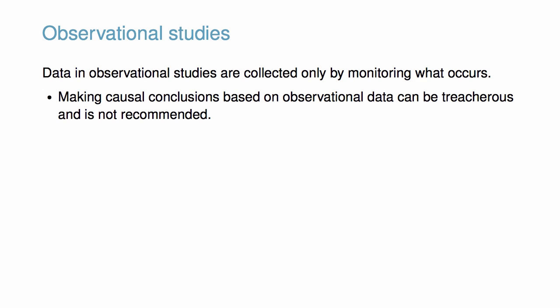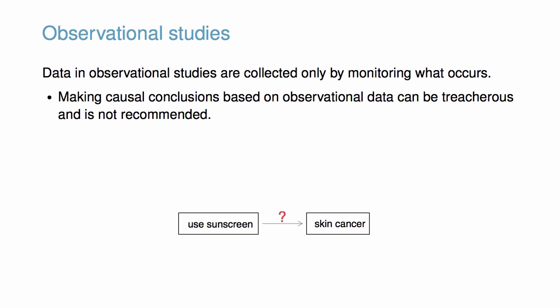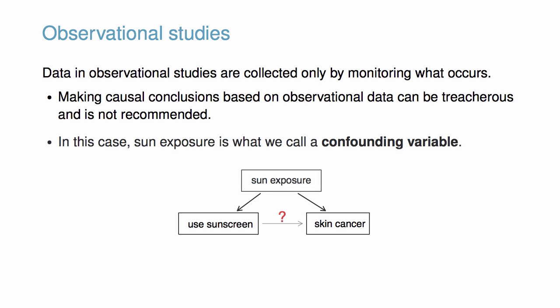For example, suppose an observational study tracked sunscreen use and skin cancer, and it was found that the more sunscreen somebody used, the more likely the person was to have skin cancer. This doesn't necessarily mean sunscreen causes skin cancer. In fact, it's more likely that sun exposure is what we call a confounding variable — a variable that is correlated with both the explanatory and response variables.